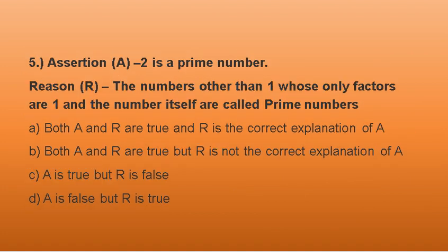Next question on your screen. Here, 2 is a prime number, an even prime number. The numbers other than 1 whose only factors are 1 and the number itself are called prime numbers. Explanation is given. I have taken 2 as a prime number. So I think we go with option number A.